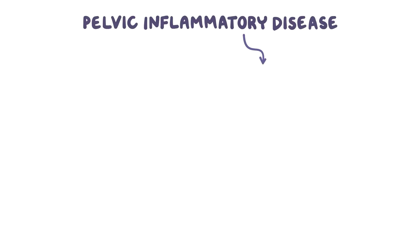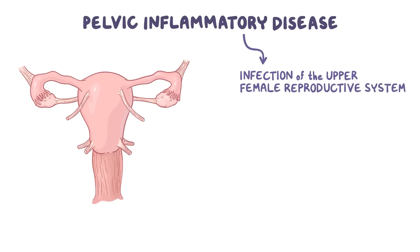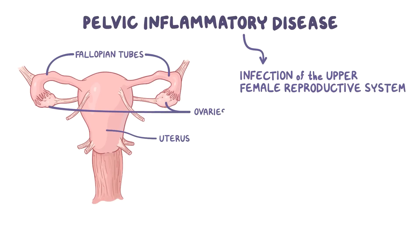Pelvic Inflammatory Disease, or PID, is an infection of the upper female reproductive system, including the uterus, fallopian tubes, and ovaries. It can cause a number of serious complications, including infertility.